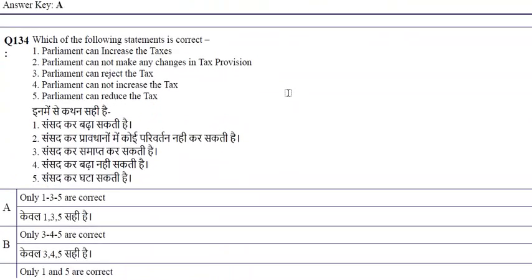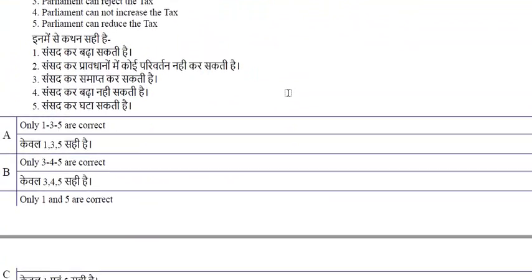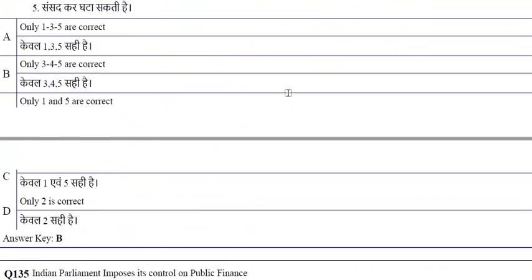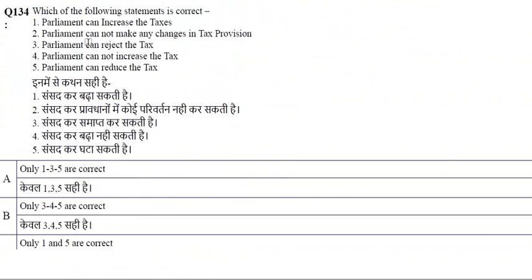Parliament can reject and reduce tax, but cannot increase tax. Options 3, 4, and 5 are correct — this is option B.